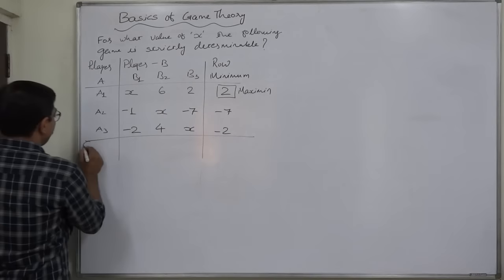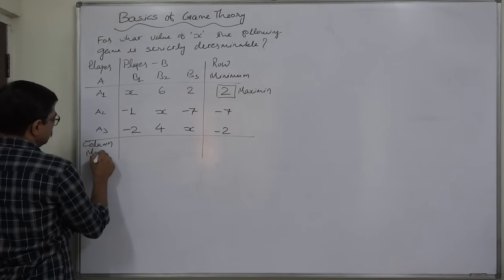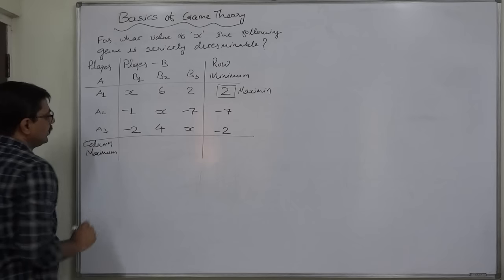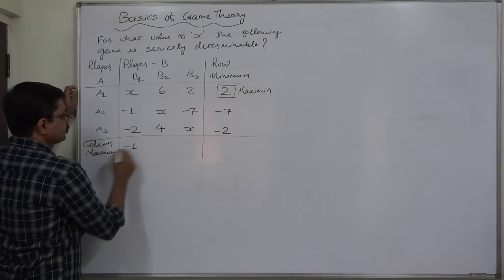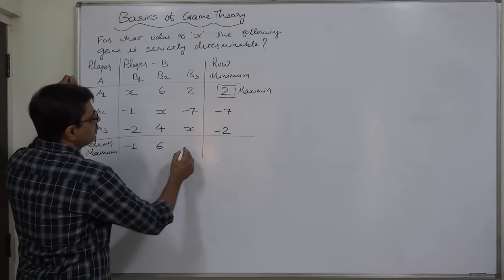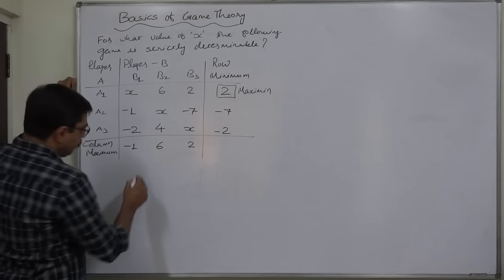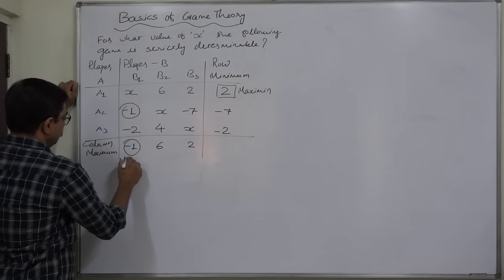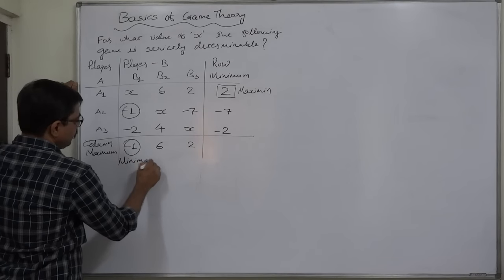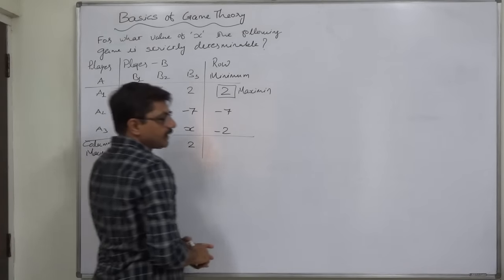Now it is turn of column maximum. In the first column ignoring X, the maximum value is minus 1, in the second it is 6, in the third it is 2, out of which minimum is minus 1. This is minimax, minimum of the maximum.